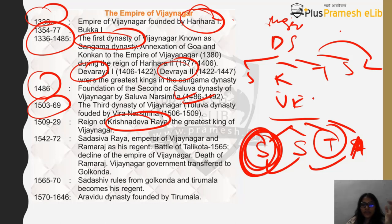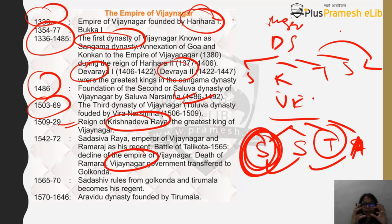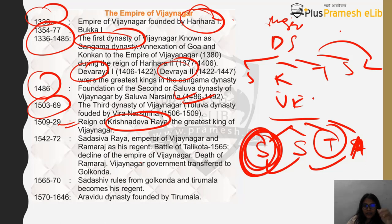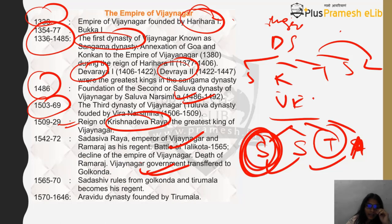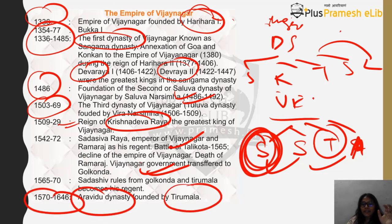Many battles were fought during Krishnadevaraya's time, and after him the Vijayanagara Empire started getting weak, with territories being accumulated by smaller surrounding states. After Krishnadevaraya came Sadashiva Rai, during whose regency many battles were fought. After the death of Ramaraja, the Vijayanagara government became very weak and territories transferred to Golkonda. Finally in 1570 the Aravidu Dynasty was founded by Tirumala.